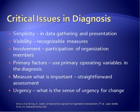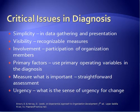There are some critical issues in diagnosis. First is simplicity — the more simple the data gathering and the more simple the presentation, the easier it is for your client to understand. Visibility is important, meaning people recognize that the measures accurately measure what it is you say you're measuring. Involvement is very important — as many organization members as possible is ideal when determining who is going to participate in gathering data. Primary factors are the operating variables you're going to be using in the diagnosis.